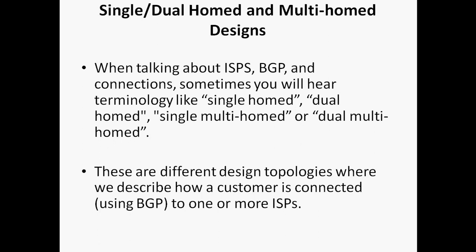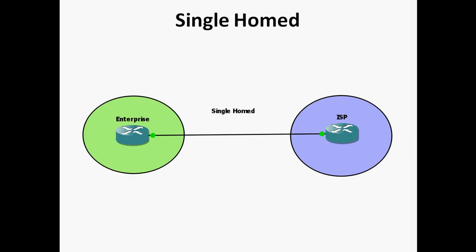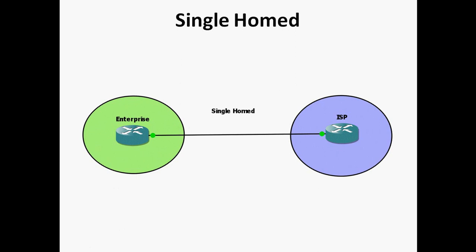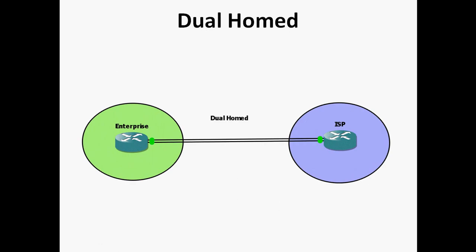When talking about ISP BGP connections, you will hear terminologies like single home, dual home, single multi-home, and dual multi-home — these are different design topologies describing how the customer is connected to the ISP. The first one is single home, which means the customer is connected to a single ISP with a single cable. The advantages are cost-effectiveness, but the disadvantage is there is no redundancy. We don't use BGP here because there is only one exit path — a static default route is sufficient.